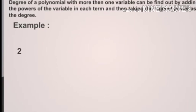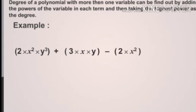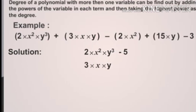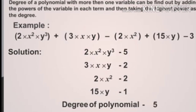Example a: 2x²y³ + 3xy − 2x² + 15y − 3. Calculate the total sum of powers of each term: 2x²y³ has power sum 5; 3xy has power sum 2; 2x² has power sum 2; 15y has power sum 1. The highest is 5. Hence, the degree of the polynomial is 5.